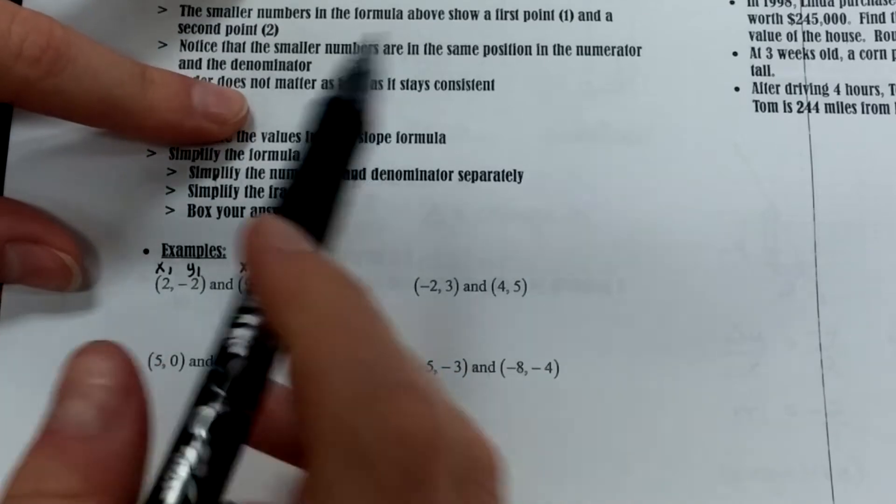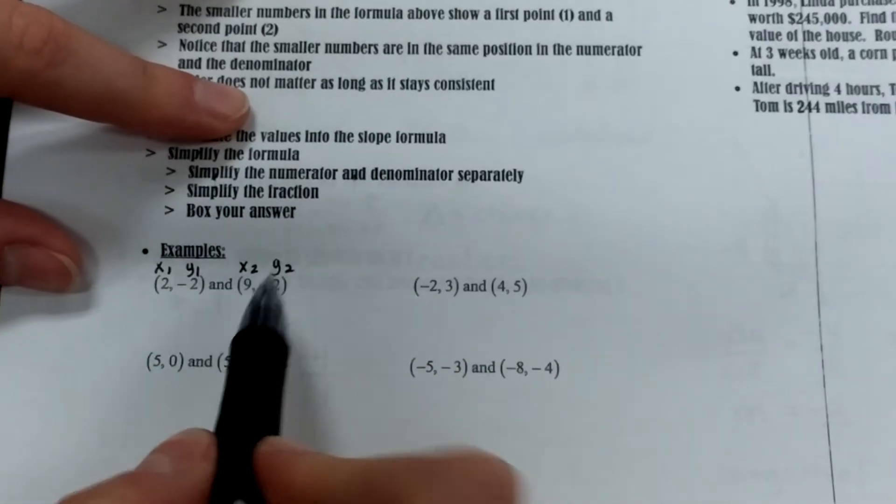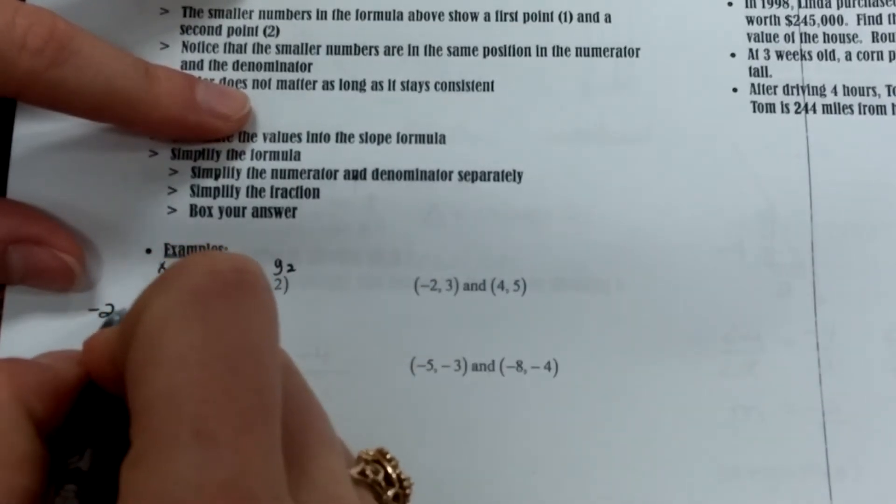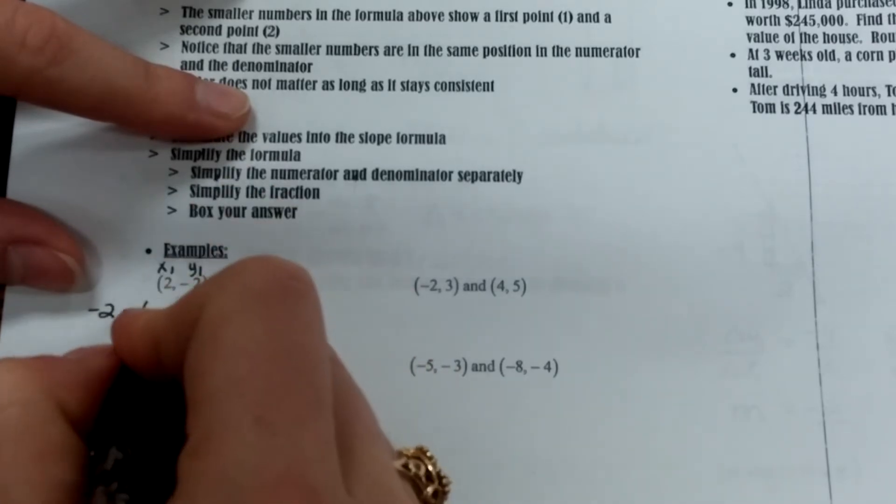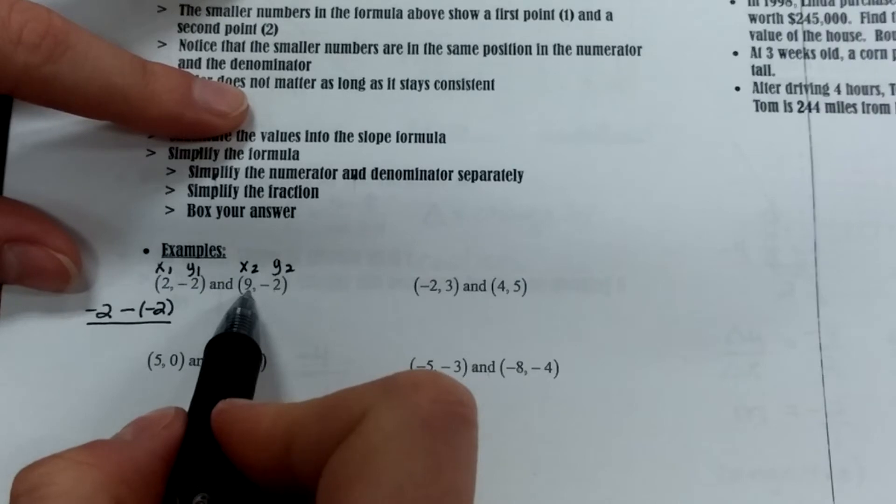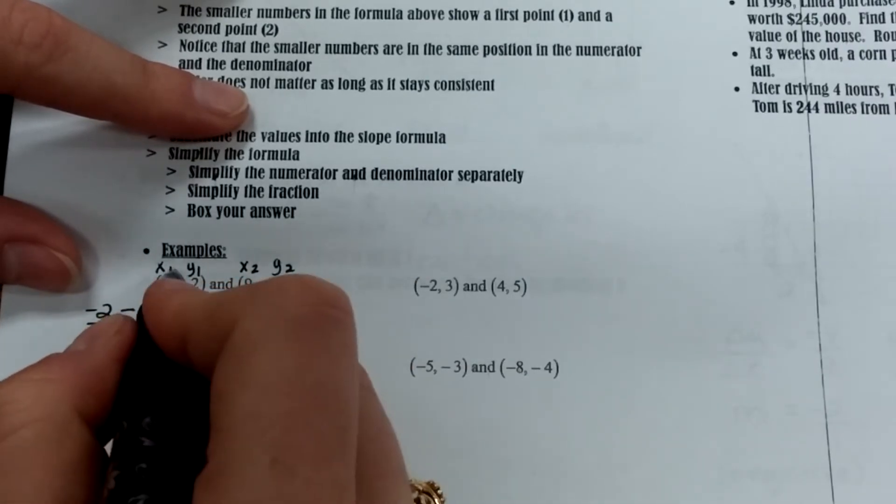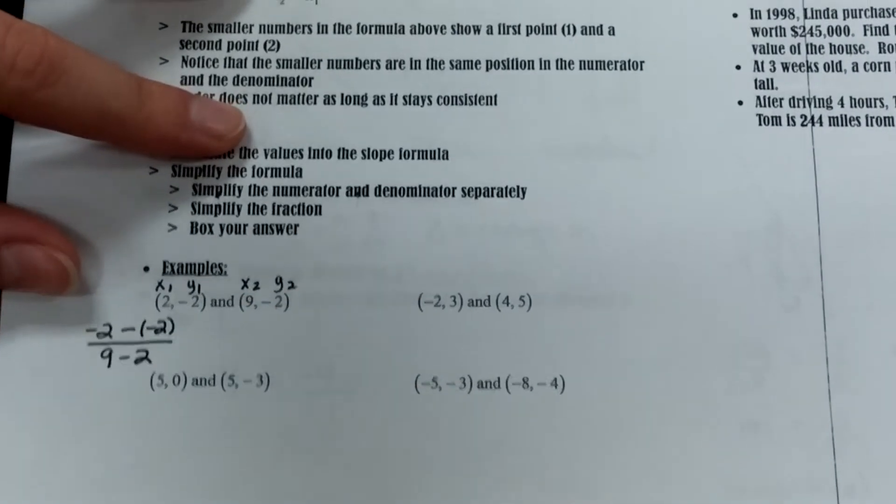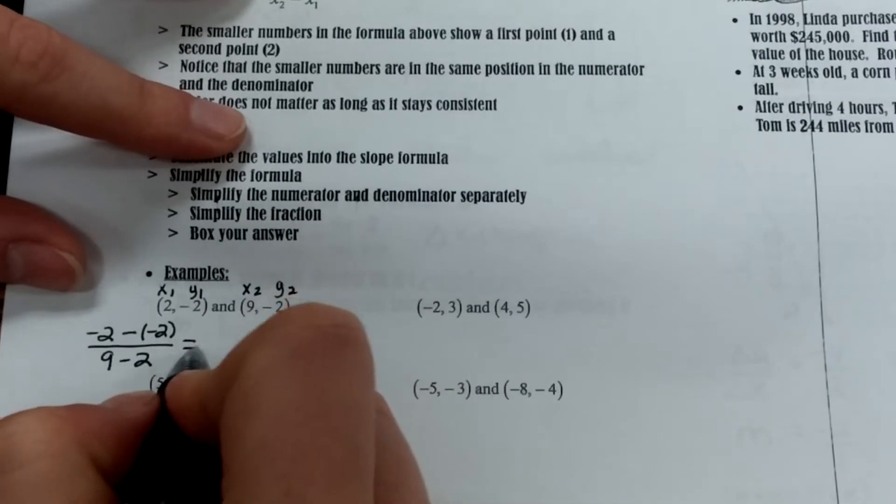So I'm using that formula: y2 minus y1, so y2 is negative 2, minus y1, so minus a negative 2, over x2, which is 9, minus x1, which is 2. So again, using that formula, just plugging in.